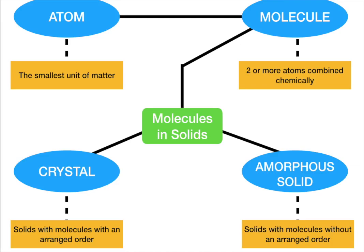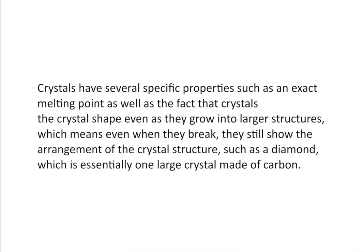Let's finish our graphic organizer now that we've talked about molecules and solids. The first type is an amorphous solid — solids with molecules without an arranged order. Crystals have the arranged order — they form a regular repeating pattern. Crystals have specific properties such as an exact melting point: water melts from ice to liquid at zero degrees Celsius and boils at 100 degrees Celsius. The crystal also maintains its crystal shape even as it grows into larger structures, and even when it breaks, it still shows the arrangement of the crystal structure.